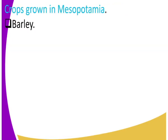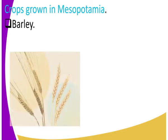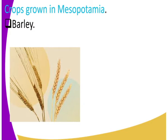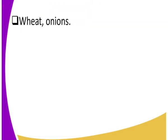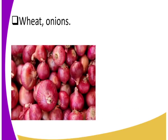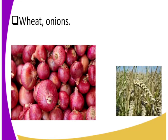Now let's look at some of the indigenous crops grown in Mesopotamia. We have barley — don't confuse barley with wheat. We also have wheat, and we have onions. For those who don't know onions, those are the onions that were first domesticated or grown in Mesopotamia, the land between River Tigris and Euphrates.